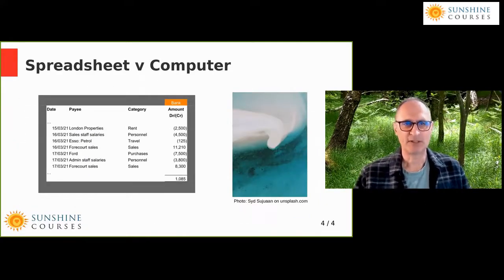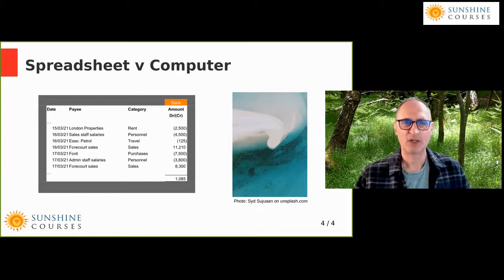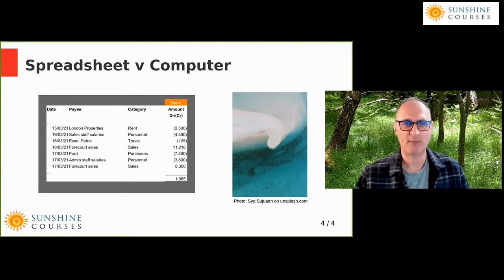Throughout all these illustrations, we're going to use some very simple transactions — we've seen them before in previous weeks. This is an extract from a cash book with about five or six transactions. Whether you've got five or six, or 500 or 600 entries, the principles are exactly the same. We use small numbers so you can see what's going on in your head, but once you get in the flow of things, the spreadsheet and computerized accounting principles become invaluable.